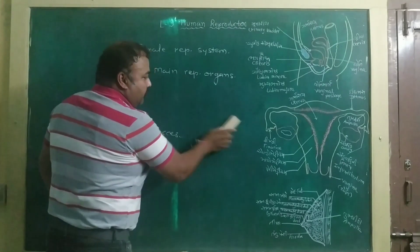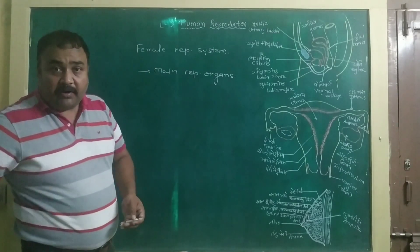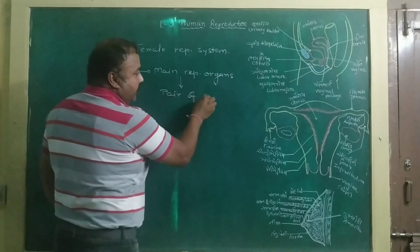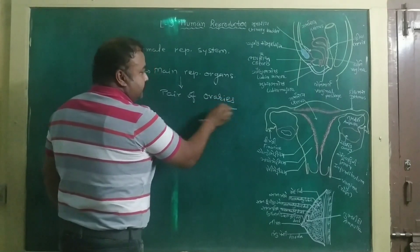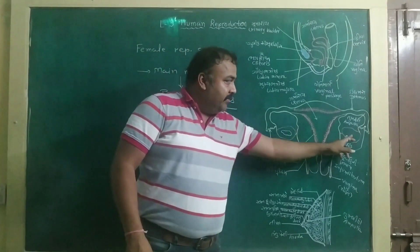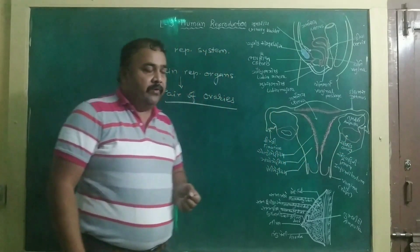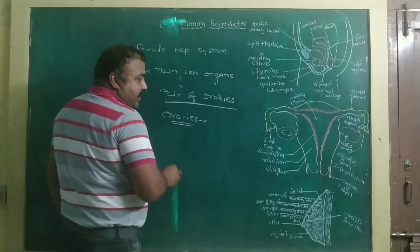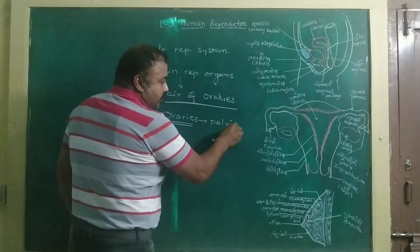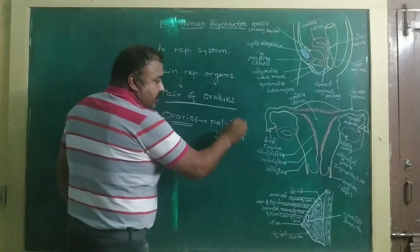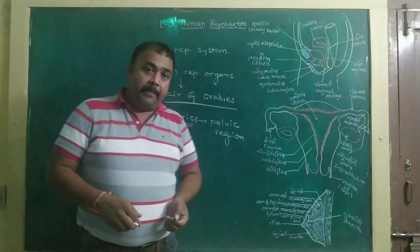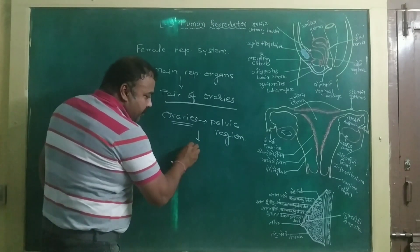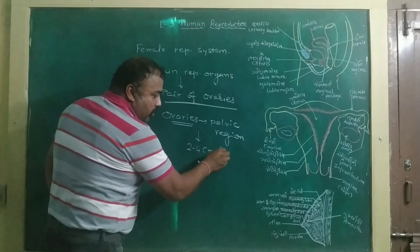The main reproductive organs in the female reproductive system are nothing but a pair of ovaries. Here in the diagram we can observe the location of the ovaries. The ovaries are located in the pelvic region, that is in the lower part of the abdomen, one on each side, and each ovary is a 2 to 4 cm long structure.